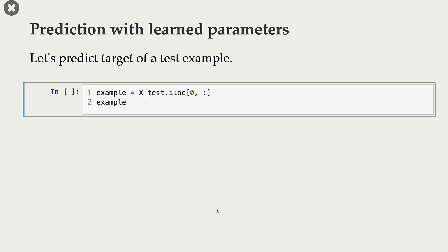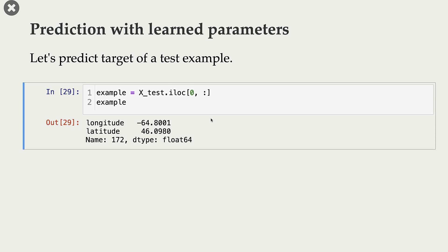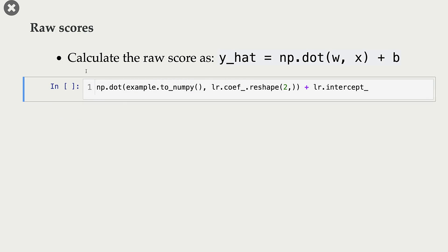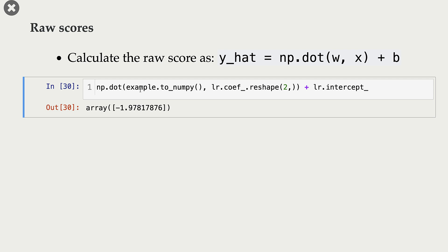How do we make predictions using these learned parameters? Given a new example with its feature values, we calculate the weighted sum of the feature values using the learned coefficients, add the intercept to it to get a score, and then apply a threshold. So, I'm calculating this weighted sum of feature values and adding the intercept. This is our score.